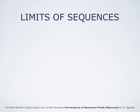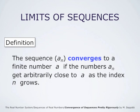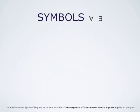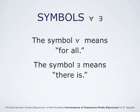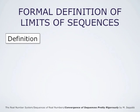The first definition we gave for limits of sequences was that a sequence a_n converges to a finite number a if the numbers a_n get arbitrarily close to a as the index n grows. It is necessary to make this concept of 'arbitrarily close' precise mathematically. For that end we need the symbols: the upside-down capital A meaning 'for all', and the reflected capital E meaning 'there exists'. Using these symbols, we now define limits of sequences formally.